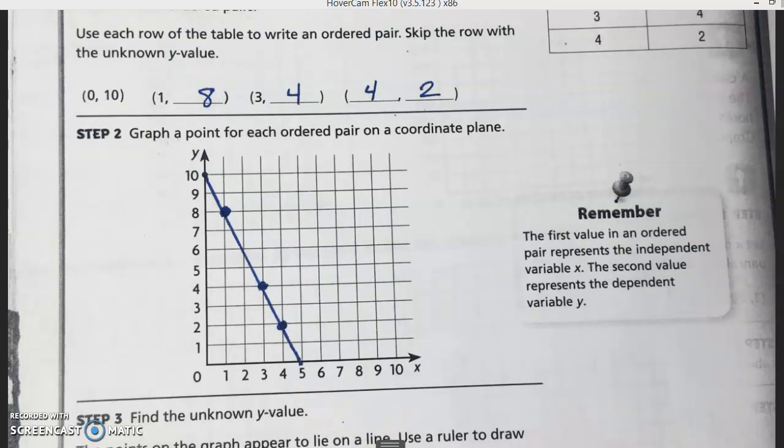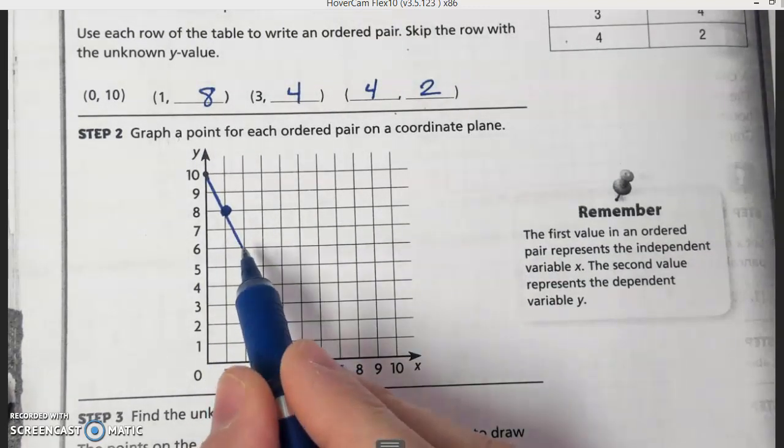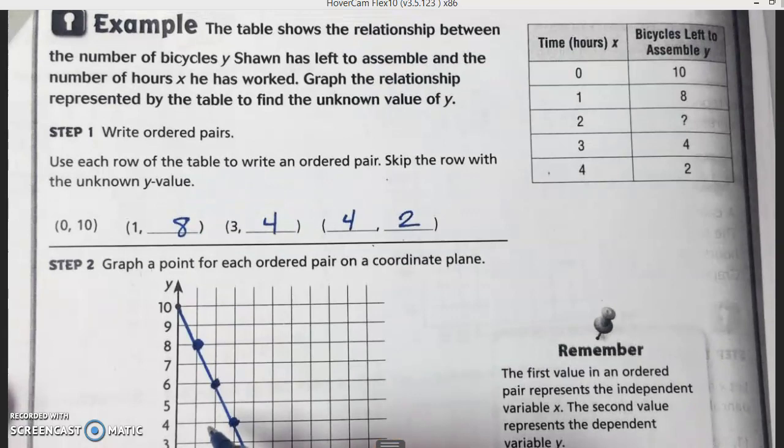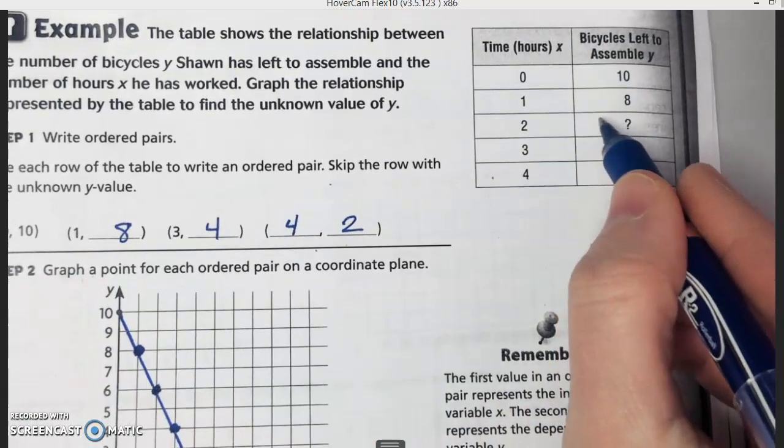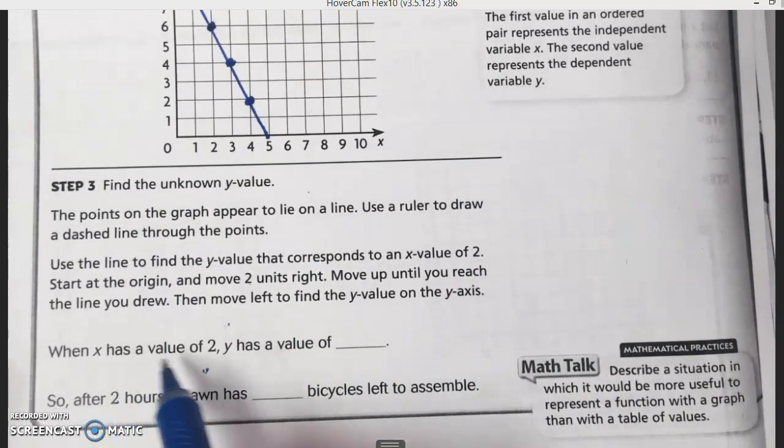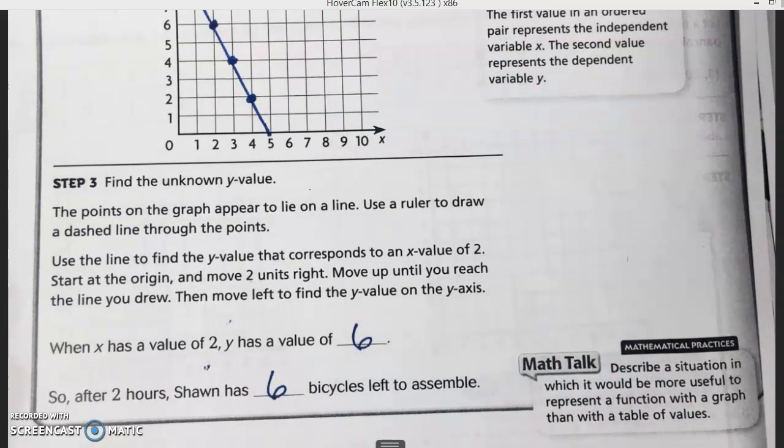Find the unknown Y value. The points on the graph appear to lie on the line. Use a ruler or your protractor to draw a dashed line through the points. Use the line to find the Y value that corresponds to an X value of two. We're going to go to where X is two, and we're going to see where that meets the line, which should be right here. So when X is two, Y would be six. That means after two hours, Sean still has six bicycles left to assemble.